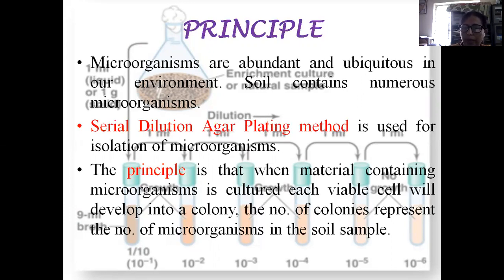The principle is that when material containing microorganisms is cultured, each viable cell will develop into a colony. The number of colonies represent the number of microorganisms in the soil sample.